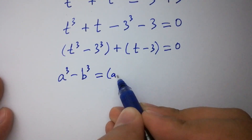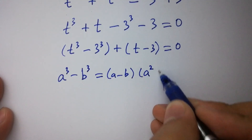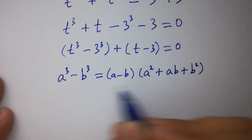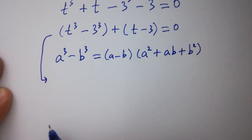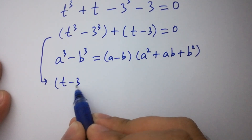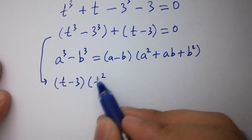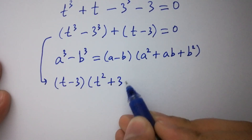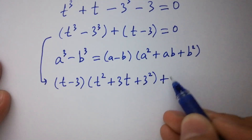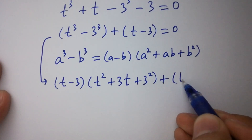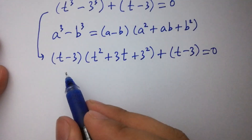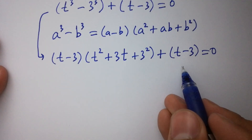By this we know the formula of a cube minus b cube, which is equal to a minus b times a square plus a b plus b square. Then we have t minus 3 times t square plus 3t plus 3 square.